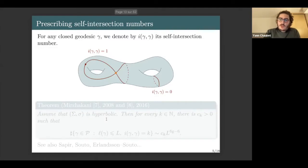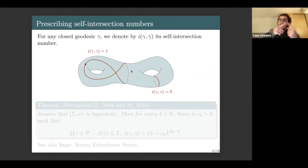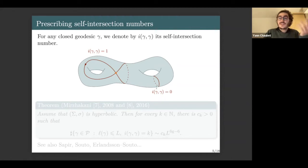A second constraint you may want to impose on closed geodesics is the self-intersection number. You take a closed geodesic on your surface and you count how many times it intersects itself. For example, in this picture this closed geodesic intersects itself once, and this one does not intersect itself — so we say it is simple.